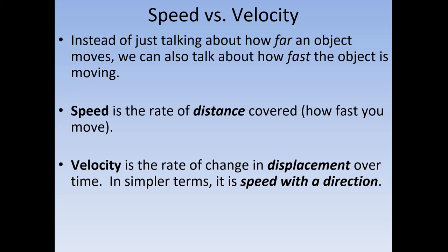Velocity, on the other hand, is the rate of change in displacement over time — or another way to say it, it's speed with a direction. Since we're using displacement, which is a vector, and since it involves a direction, velocity is a vector. Speed is our scalar and velocity is our vector. A helpful memory tip: speed is a simple term, and scalars are simple terms.